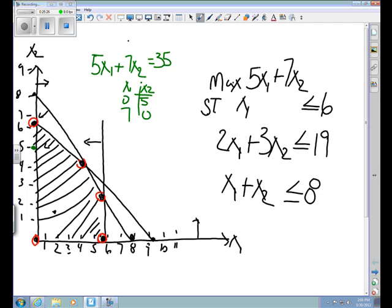So where x1 equals 0 and x2 equals 5, that's this spot right here. And where x2 equals 0, x1 equals 7 is this spot right there. And I can connect those dots. And there you go.